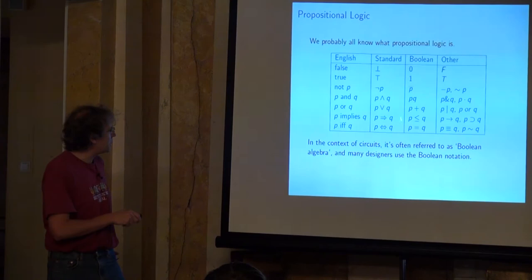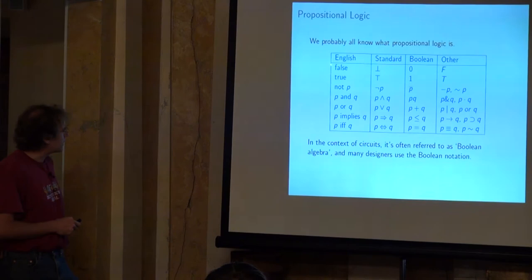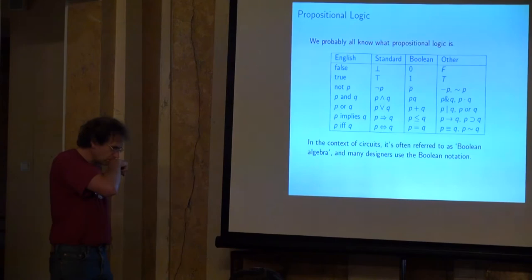If you work in the hardware industry, it's very common to see Boolean notation because most digital circuit designers still use it. I'm going to use this symbol for false, this for true, this one for not-p, this one for p-and-q, this one for p-or-q, this one for p-implies-q, and this one for p-if-and-only-if-q.